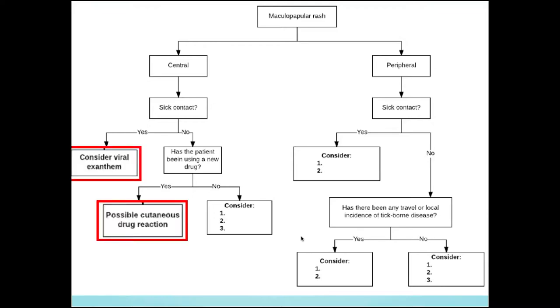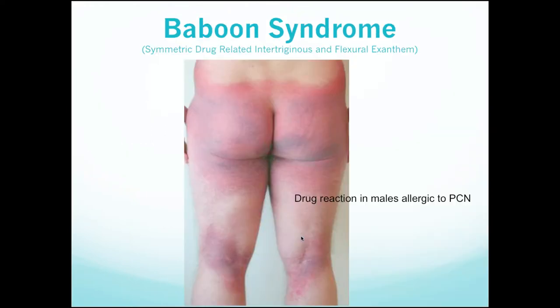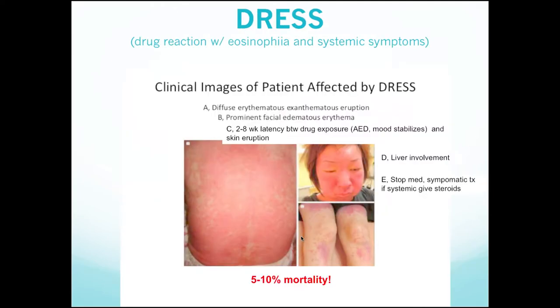Starting with viral exanthems and drug reactions - most of these you're treating symptomatically: topical steroids, topical antihistamines. These are not always central; you can have facial involvement and extremity involvement. Mucosal involvement tends to be rare and also a bad sign. They often spare skin folds, except in symmetric drug-related intertriginous and flexural exanthem, formerly known as baboon syndrome. It's typically seen in adult males allergic to penicillin and affects the popliteal aspect of the knee and buttock predominantly.